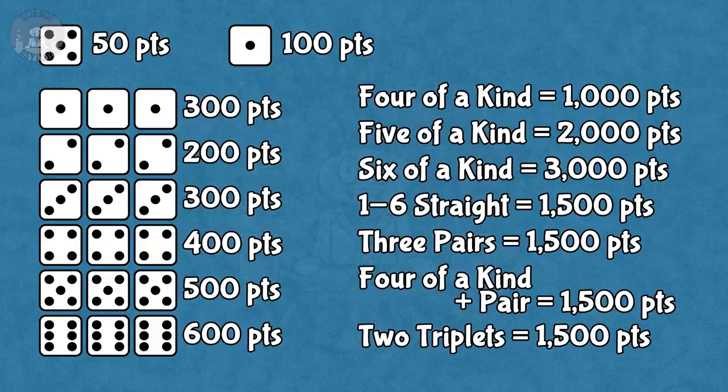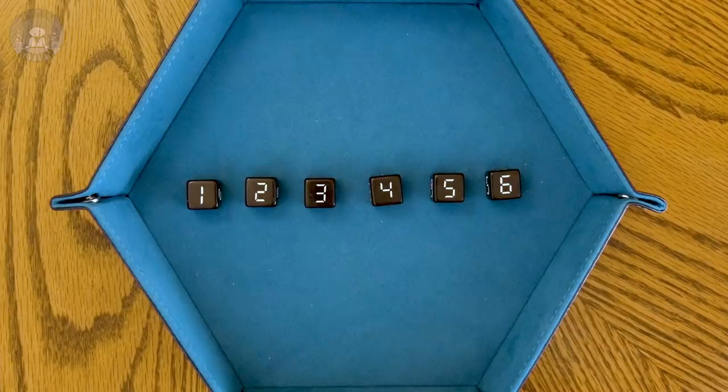The only way to score with one die is to roll a 1 or a 5. Since there are only six possible outcomes, each of them will only have a 1 in 6 chance of happening.